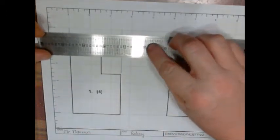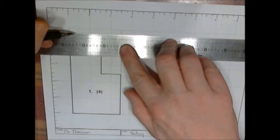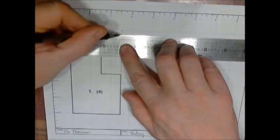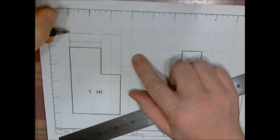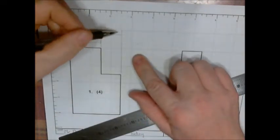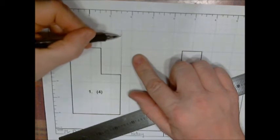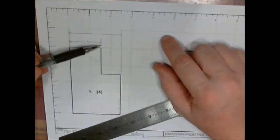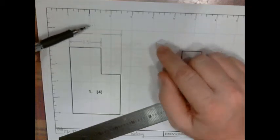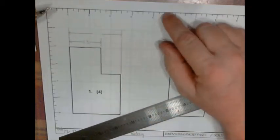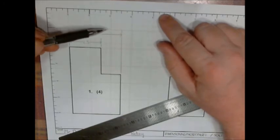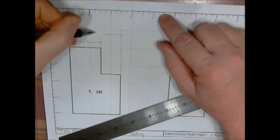The next one I am going to do is the overall length. Now you notice I stagger them and the overall length should always go on top so that we do not cross a dimension line with an extension line. If these two had been reversed you would have. Now if you look at this, this is one inch, two inch and a half, so this one is two point five.